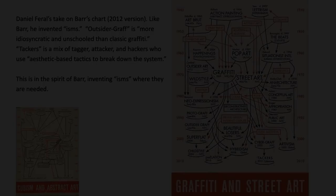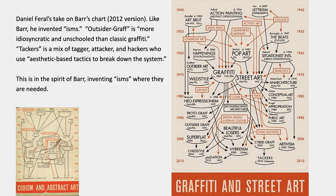This is an artist named Daniel Farrell, and this was his take on Barr's chart — you can see Barr's original on the lower left. Farrell invented isms as well. He invented 'outsider graph,' which he says is more idiosyncratic and unschooled than classic graffiti, and he invented 'tackers' — a mix of tagger, attacker, and hacker — who use aesthetic-based tactics to break down the system. So it's in the spirit of Barr, inventing isms wherever they're needed.